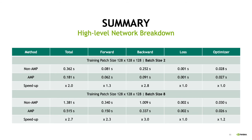We further increase the batch size of training from 2 to 8. We can see that the speedup of training is even higher — originally the speedup is 2x faster, and now the speedup improves to 2.7x faster. The major improvement actually comes from the forward paths.